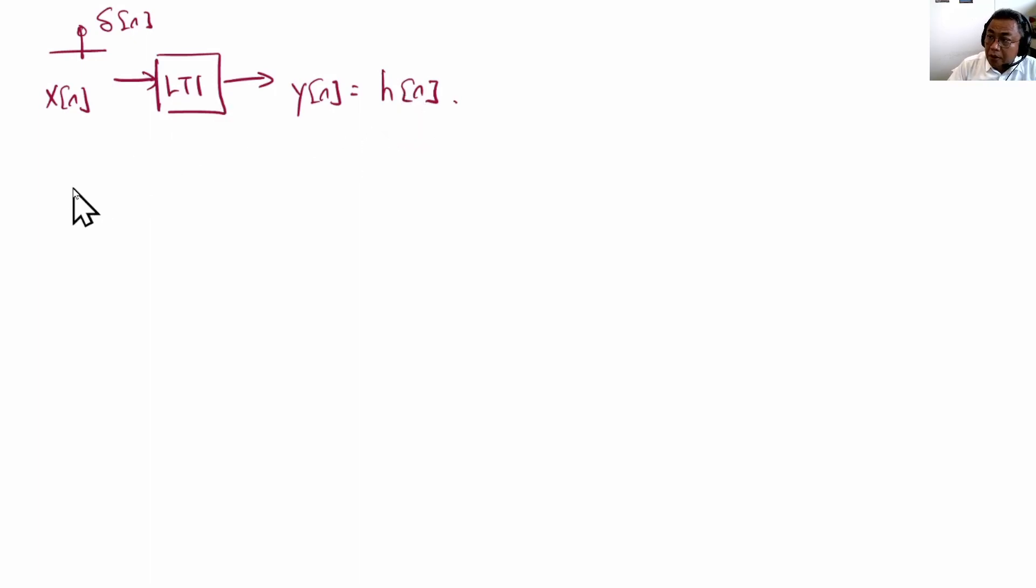Let's start from the beginning. If x[n] is any input, then y[n] is actually x[n] convolved with h[n], the impulse response. That is the equation, and of course we can write it in more detail.